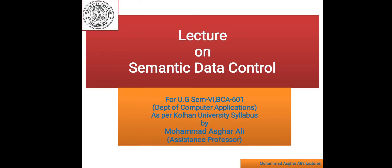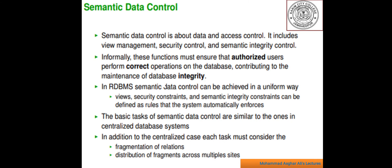Hello students, today I am going to start a new chapter: Semantic Data Control. In semantic data control there are three topics: view management, data security, and integrity control. Semantic data control typically includes view management, security control, and semantic integrity control. Informally, these functions must ensure that authorized users perform correct operations on the database, contributing to the maintenance of database integrity.